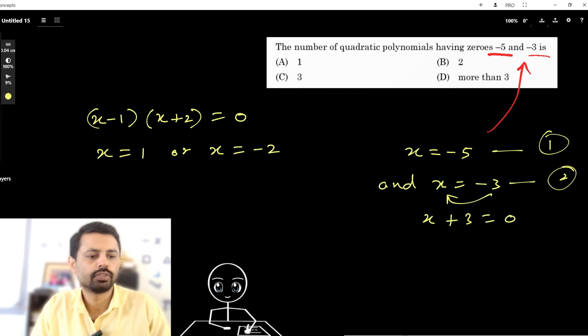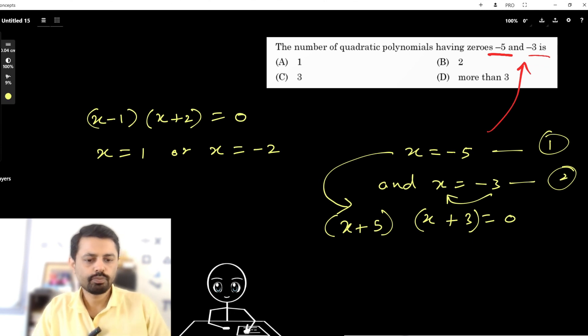Similarly, from that you can get (x+5). Okay, now let's multiply and find our polynomial. So x into this whole bracket and then 5 into that bracket.